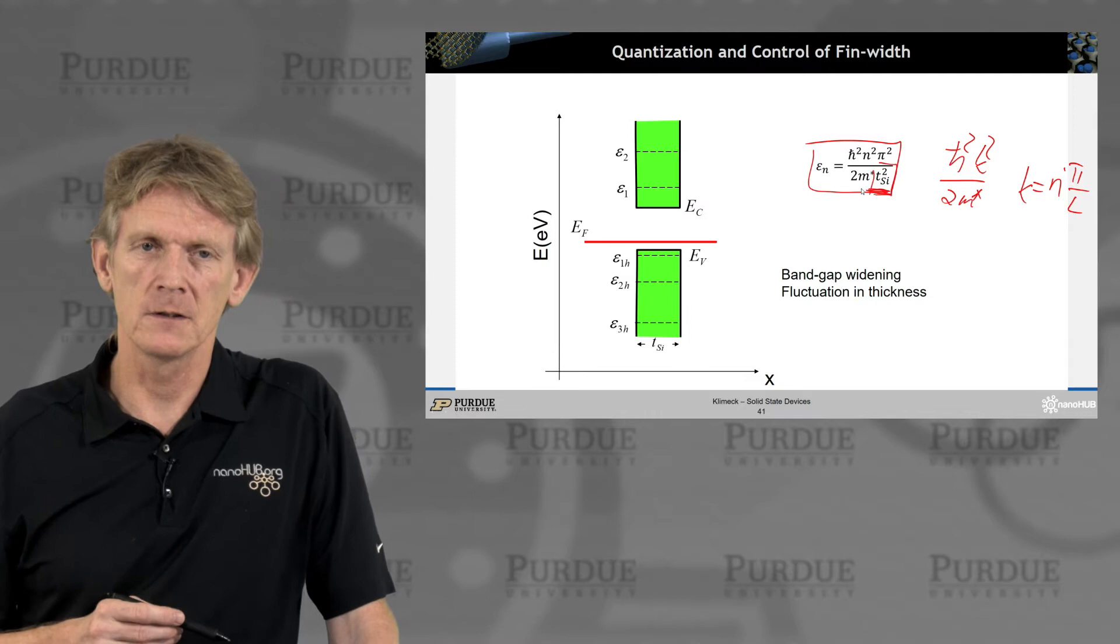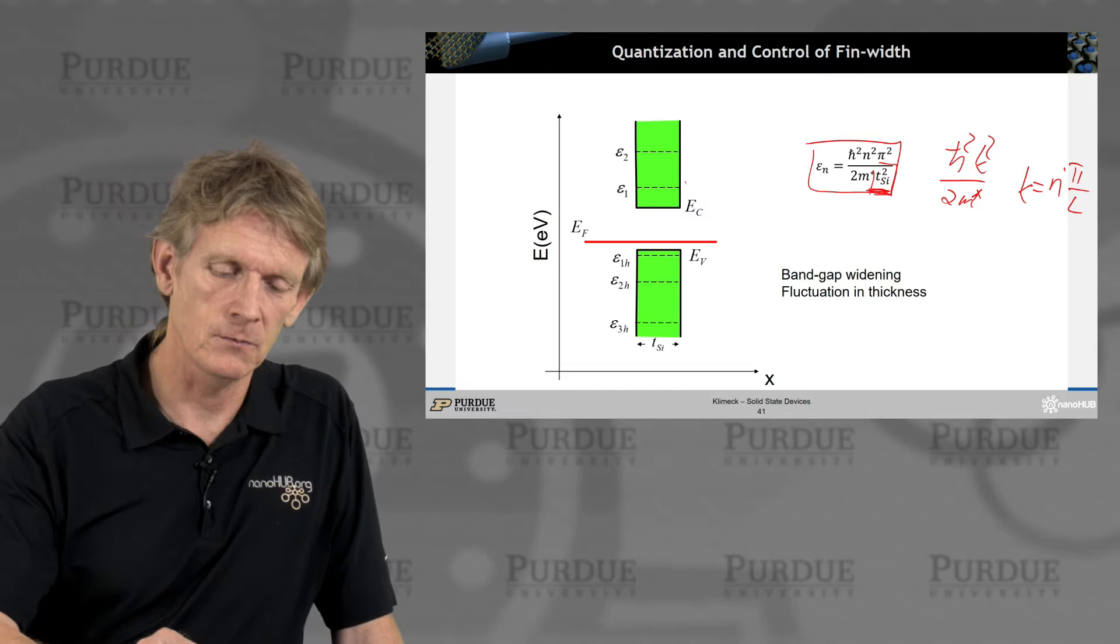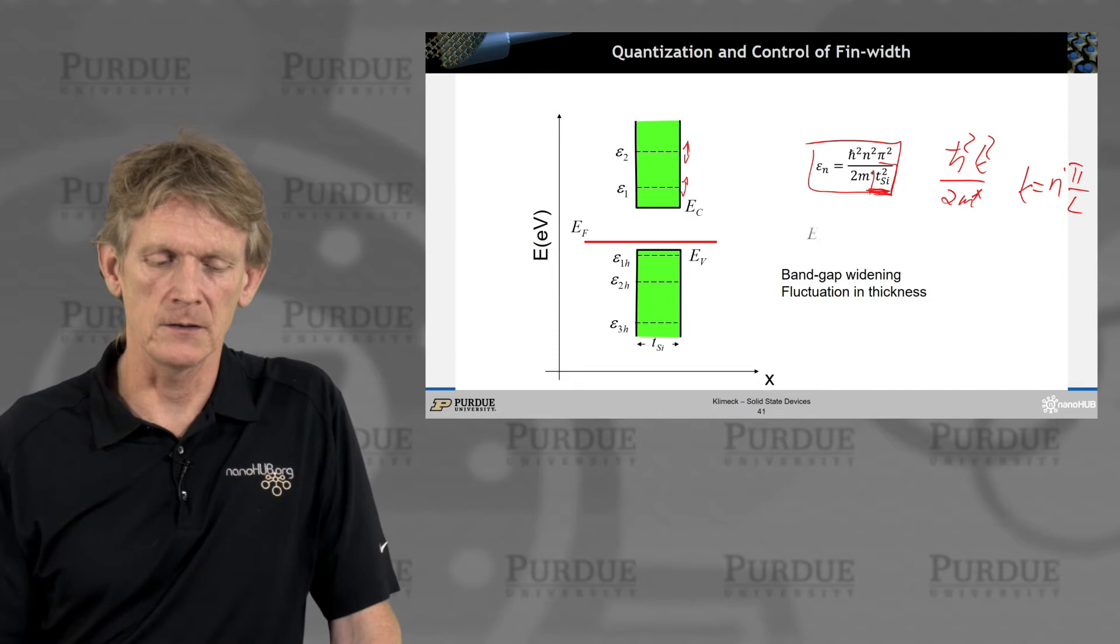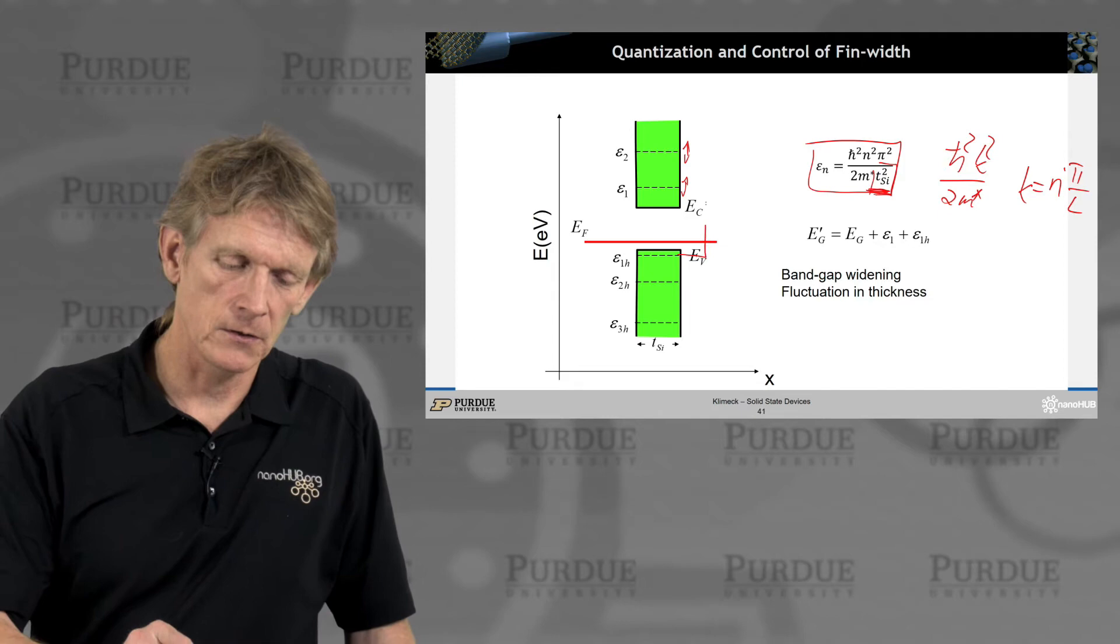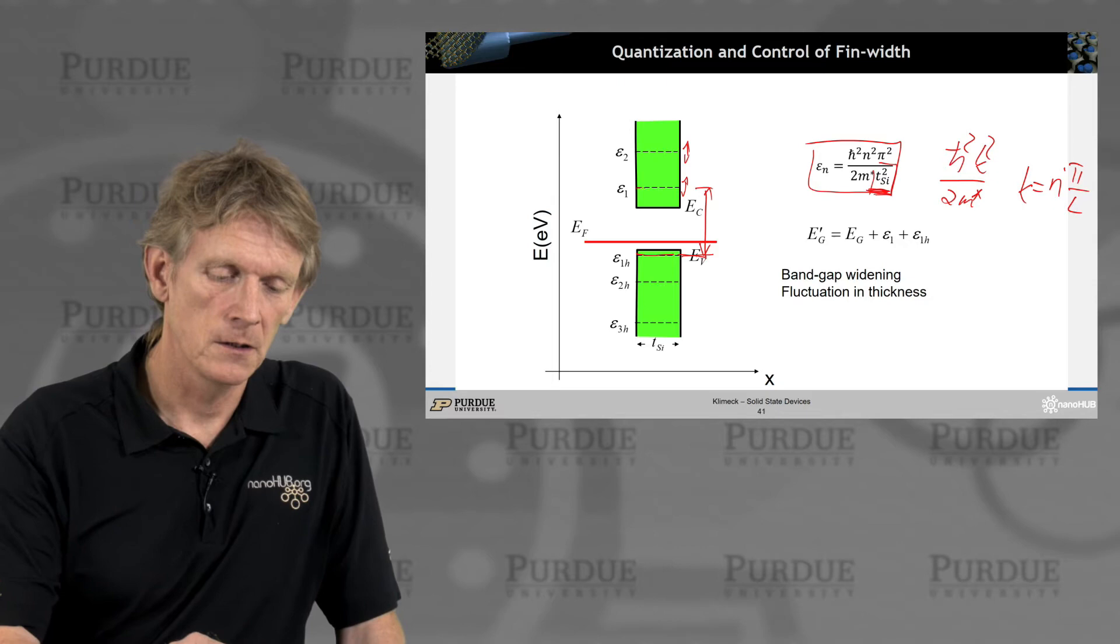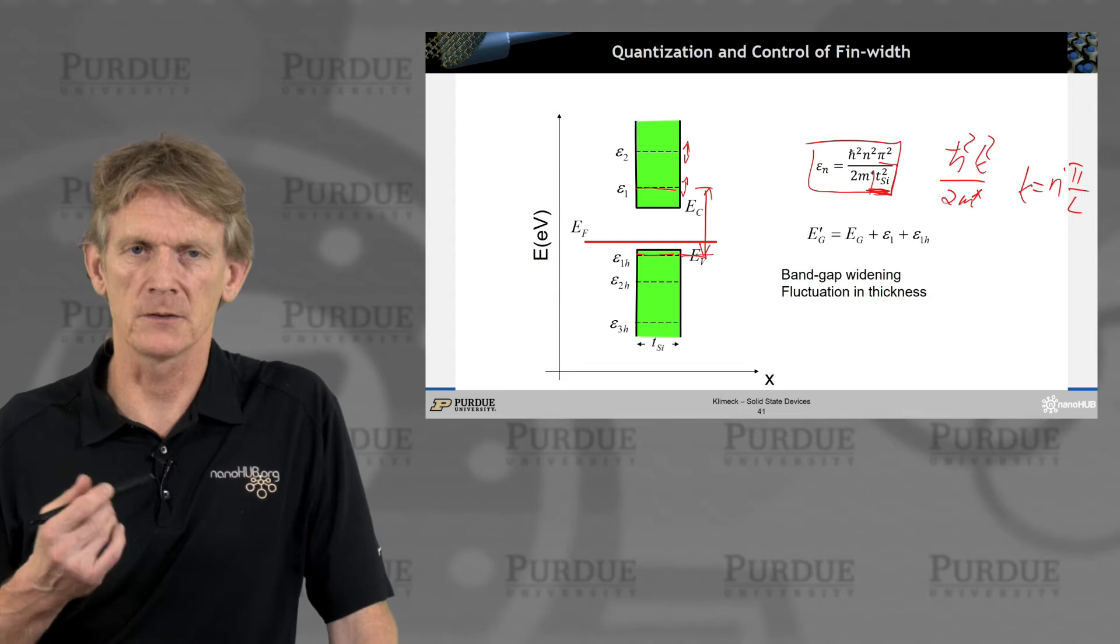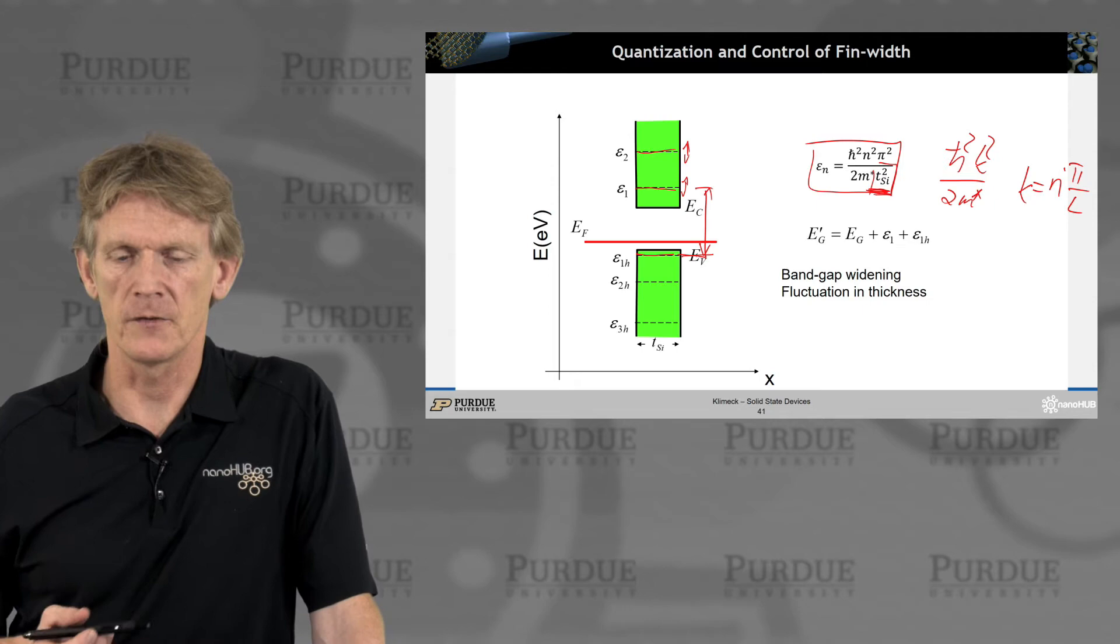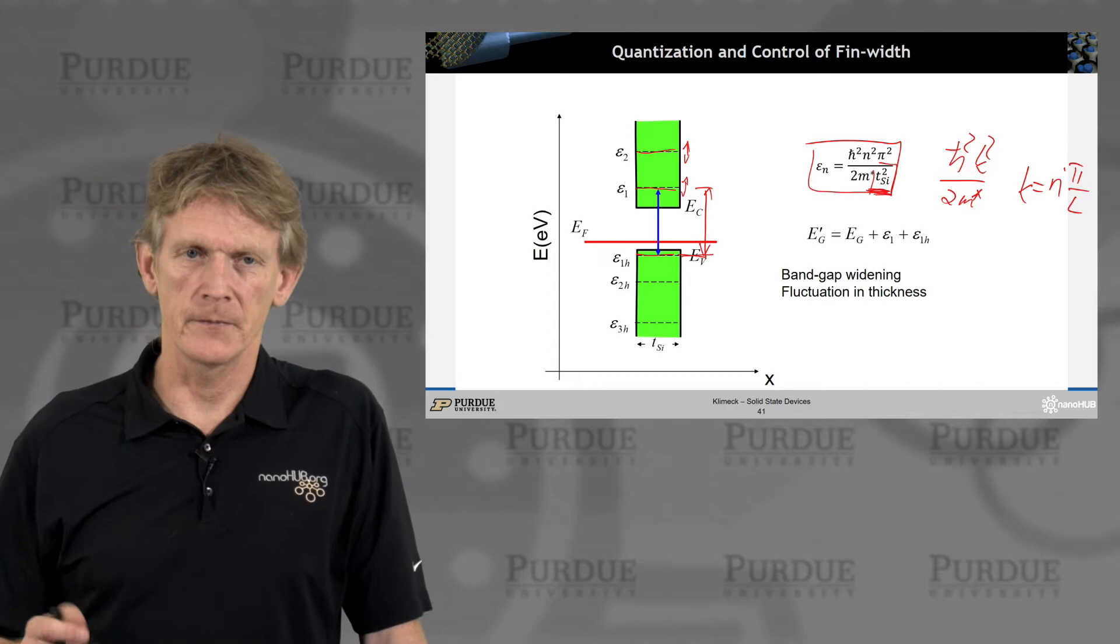Now, these eigenenergies depend on the function of thickness. So if you have fluctuations in the thickness, these eigenstates will go up and down along the channel, or from device to device. So you will have fluctuations, and your overall gap is also changed. You are not just going from the conduction to the valence band. You are actually going from the uppermost confined hole state to the lowest electron state. And you can only fit so many electrons in there, so to speak, then these other states play a role, depending on their energy, how far away they are. So you have effectively a new gap that you need to deal with.